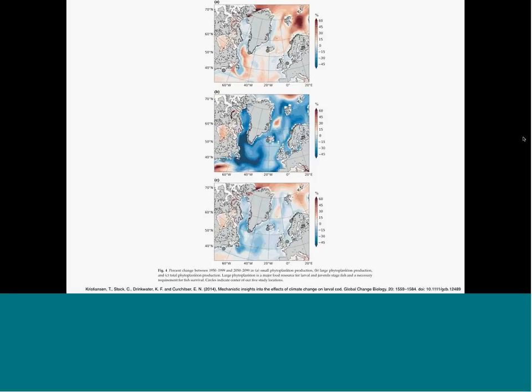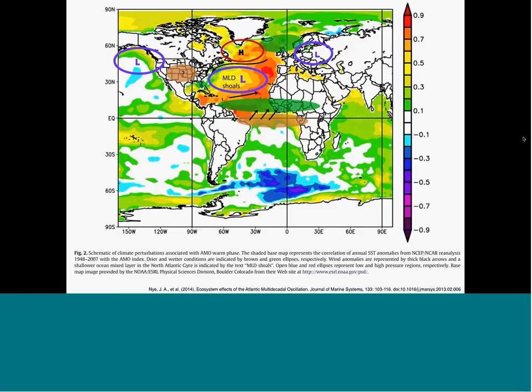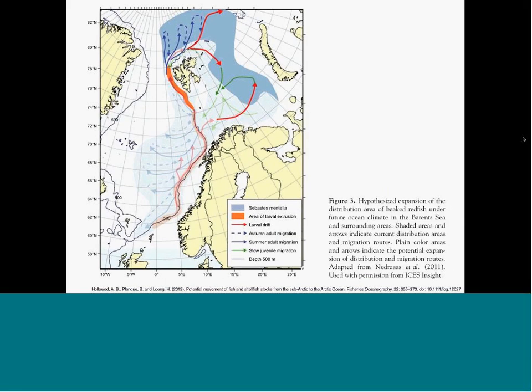We're going to hear first from Charlie Stock at the NOAA Geophysical Fluid Dynamics Laboratory, who will talk about efforts to do seasonal to decadal prediction for marine resources. Then from Janet Nye from Stony Brook University, looking at a longer time scale — more on the projections timescale, centennial — talking about projections of changes in fish, fisheries, and marine ecosystems because of climate change. And finally, Anne Hollowood from the NOAA Alaska Fisheries Science Center, talking about efforts to develop climate-ready commercial fisheries in the Northeast Pacific.